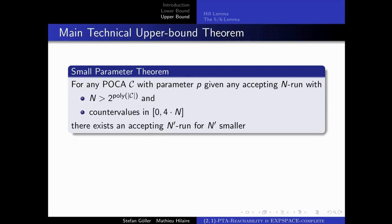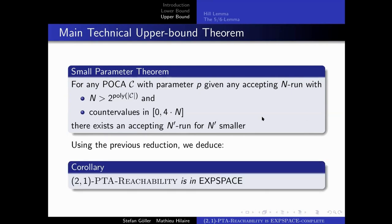Our main theorem for the upper bound states: given an accepting n-run with counter values bounded by 4n (for n sufficiently large), we can find an accepting n'-run in C for some smaller n'. Together with the reduction, this implies the EXPSPACE upper bound on 2-1 PTA. By repeatedly applying the theorem we reduce the search space for parameter valuations to a finite one. Because counter values in accepting n-runs are bounded, the set of configurations is also finite, so this is just checking reachability in a finite search space — which, due to an exponential blow-up in the construction, is in EXPSPACE.